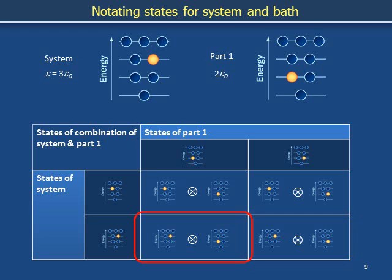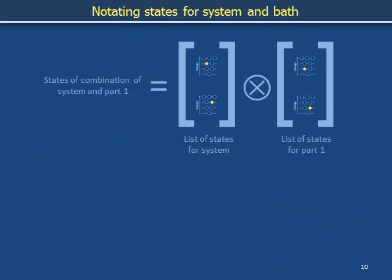We have listed the individual states of the system and part 1 as table headers, and we have explicitly enumerated each world configuration in the four cells of the table. Because the four cells are implied by the table headers, we can save visual real estate by listing the headers alone in this format with square brackets and a circle with an X.